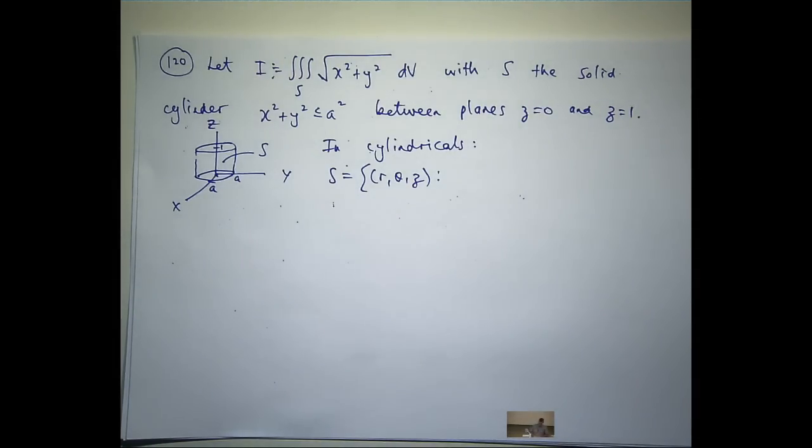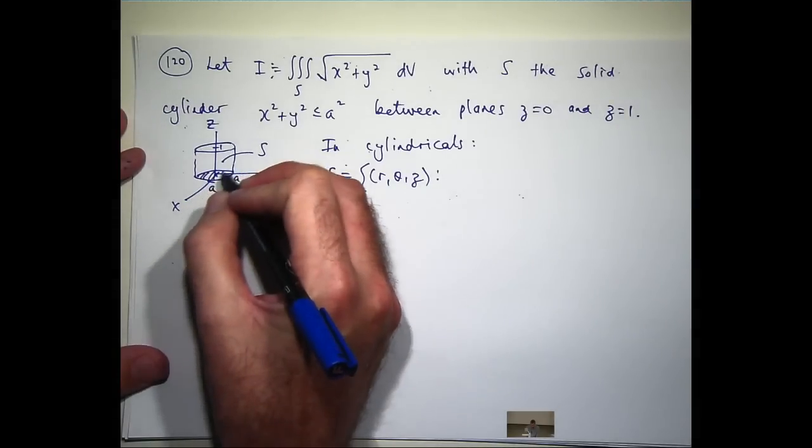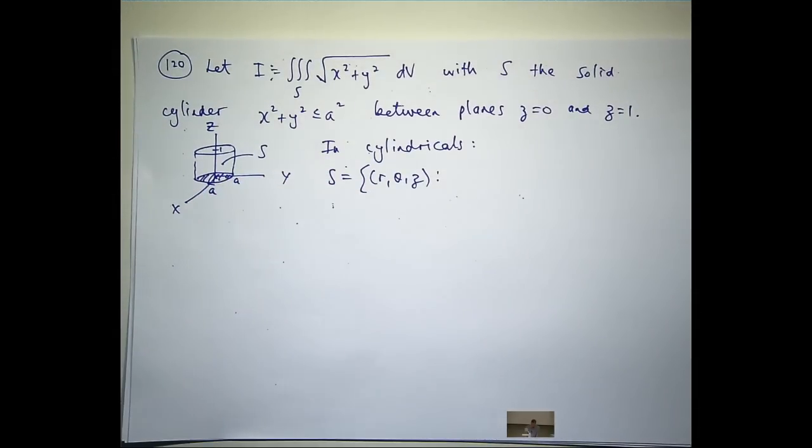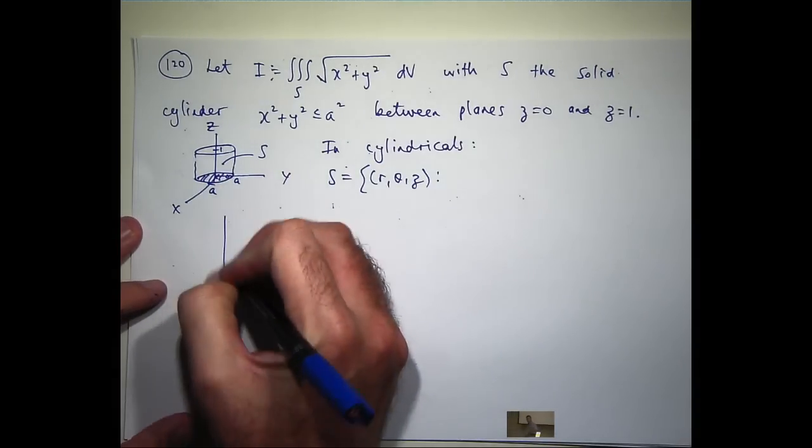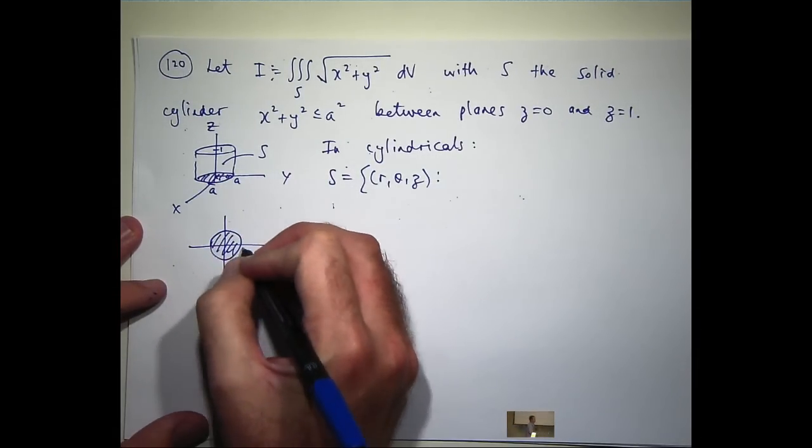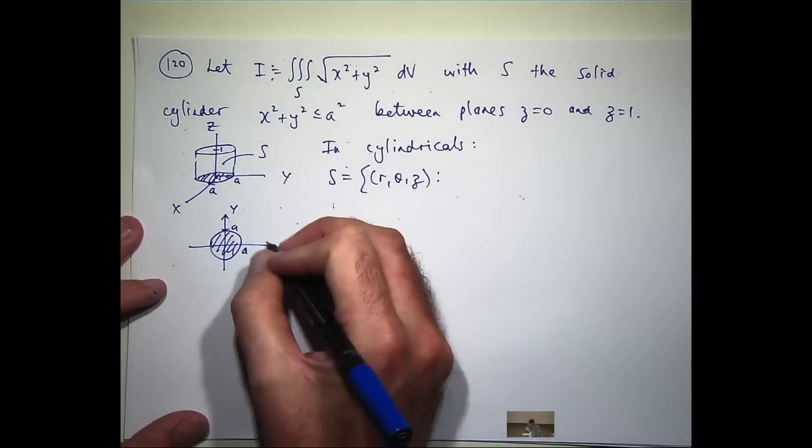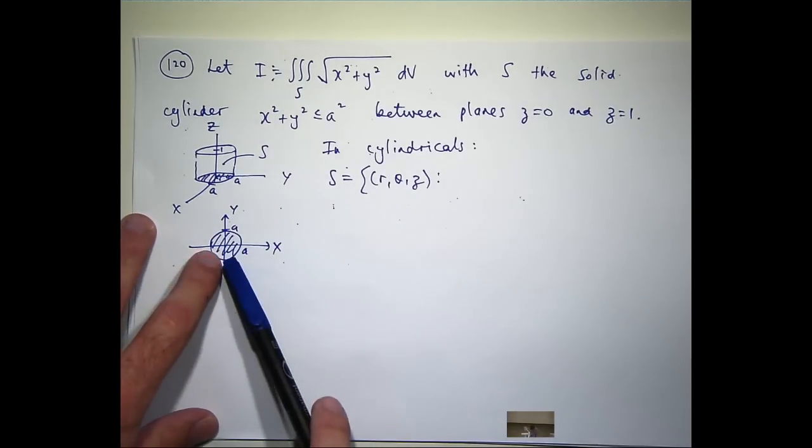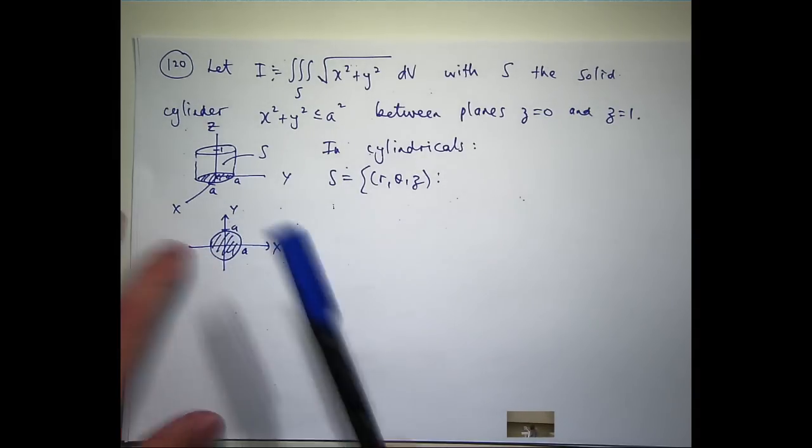So, let's get the r and theta from the projection. In the xy plane, this is going to be some sort of disk centered at the origin with radius a. To describe this in polars, the description is going to be what?